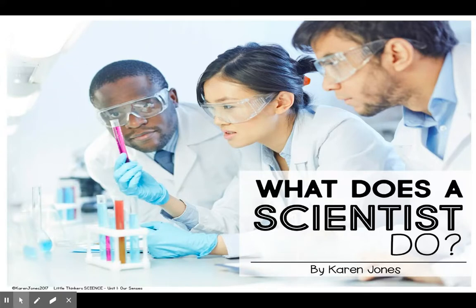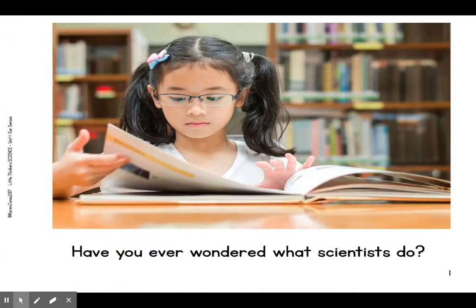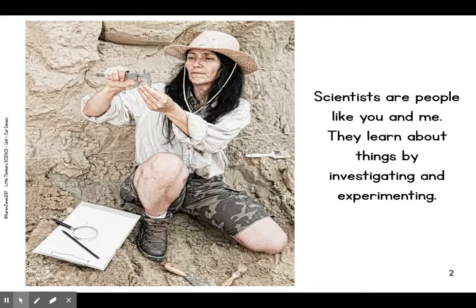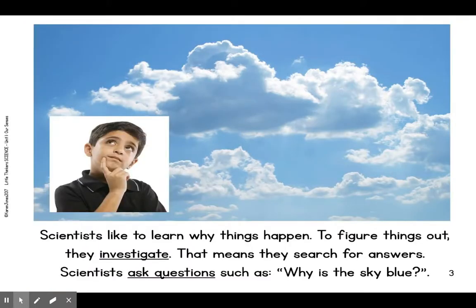What does a scientist do? Have you ever wondered what scientists do? Scientists are people like you and me. They learn about things by investigating and experimenting. Scientists like to learn why things happen. To figure things out, they investigate — that means they search for answers.